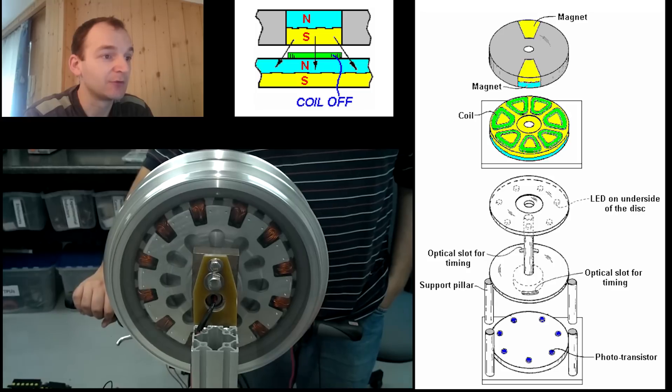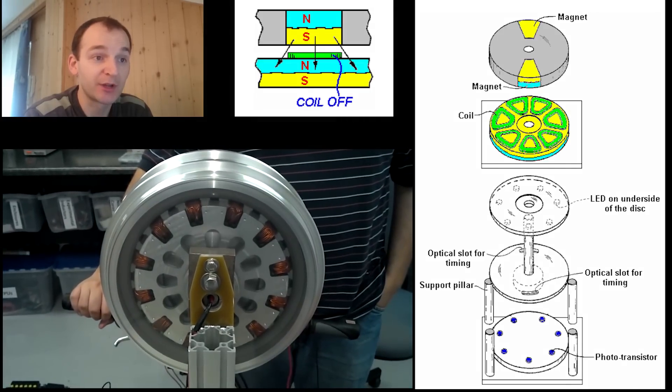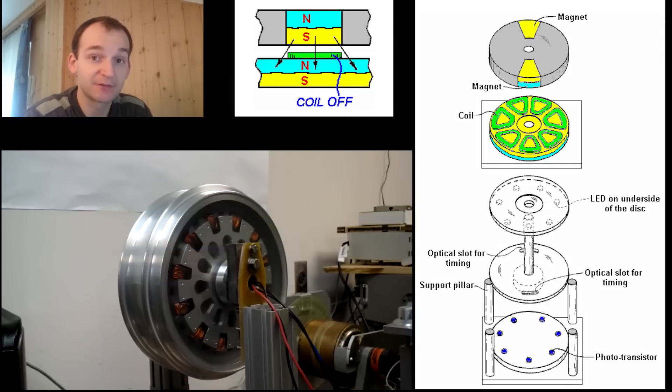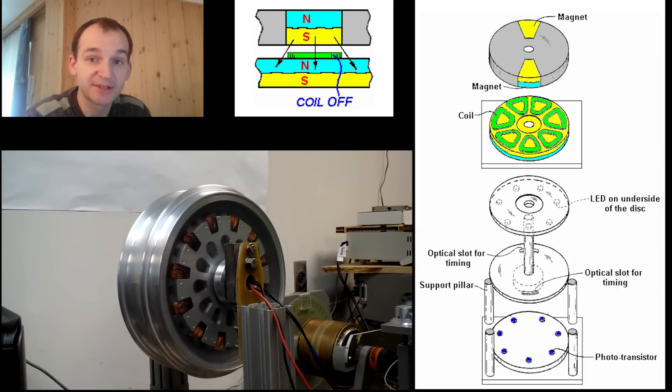The lower magnet is in the form of a disc with the poles arranged on the large circular flat faces. This is the stator magnet which doesn't move.